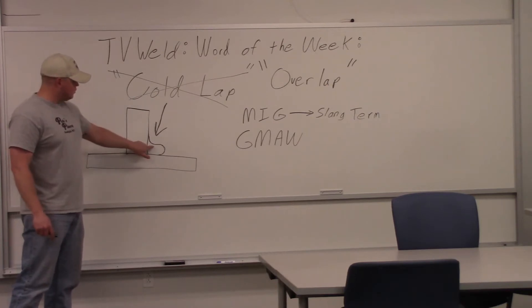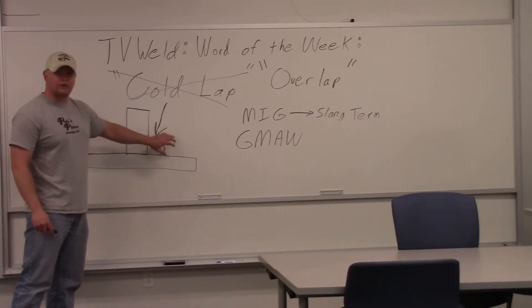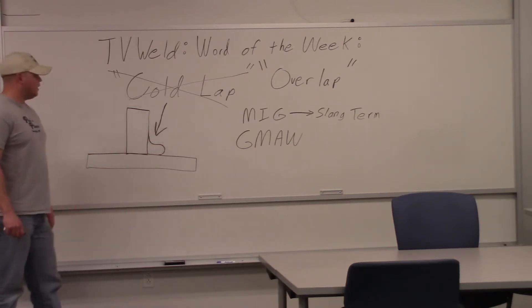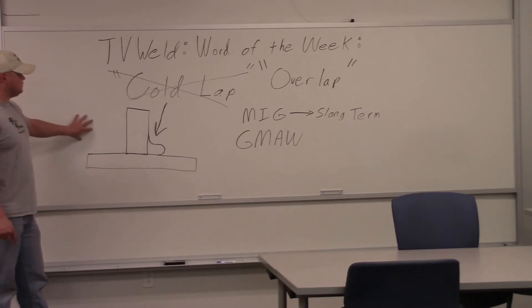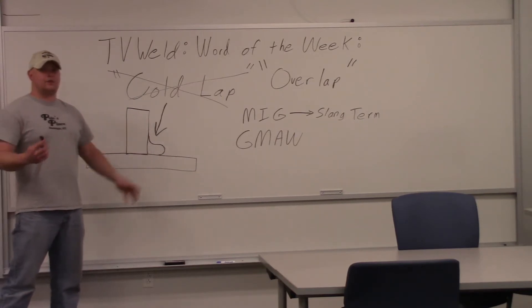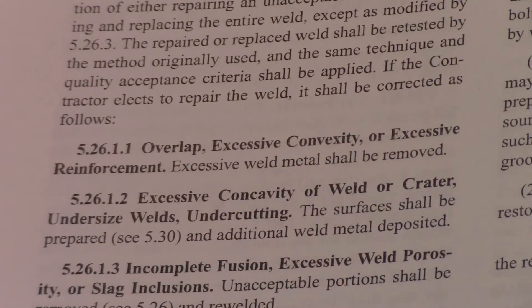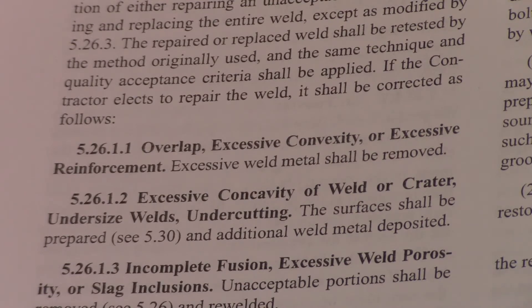You can see it's when the weld kind of rolls over down on the bottom plate and you don't quite have fusion down here. It's a very dangerous defect. We'll look at the code book real quick and show you the exact definition of overlap. This is the fabrication section of the D1.1 Structural Steel Welding Code. You can see right there — 5.26.1.1, Overlap: excessive convexity or excessive reinforcement, and it shall be removed. That's the exact definition in the code book for overlap.